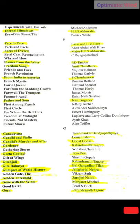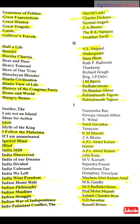Gana Devata — by Tarashankar Bandyopadhyay. Gandhi and Stalin — by Louis Fischer. Gandhi's Murder and After — by Gopal Godse. Gardener — by Rabindranath Tagore. Gita Govinda — by Jayadeva. Gitanjali — by Rabindranath Tagore, a really famous book. Gita Rahasya — by Bal Gangadhar Tilak. Glimpses of World History — by Jawaharlal Nehru. Golden Threshold — by Sarojini Naidu. Gone with the Wind — by Margaret Mitchell. Gora — by Rabindranath Tagore. Grammar of Politics — by Harold Laski. Great Expectations — by Charles Dickens. Great Illusion — by Norman Angell. Great Tragedy — by Z.A. Bhutto.